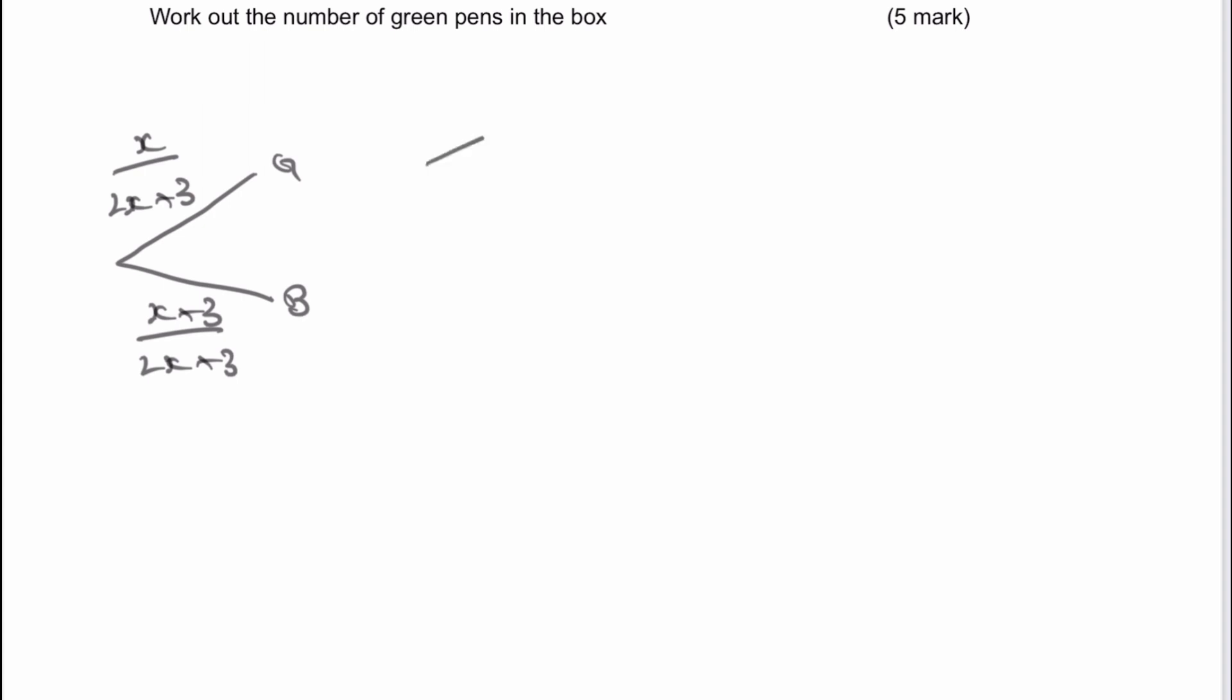What happens with the second pick? In the second pick, we've also got green and blue. But in this particular case now, because we've got one pen missing, it's now going to be 2x plus 2 as a denominator. Let's look at what happens if green is taken the first time round. Green would be 1 less, so there's going to be x minus 1. However, there will be the same number of blue pens, so that's x plus 2.